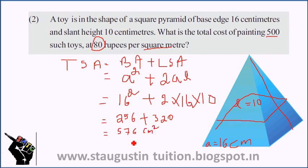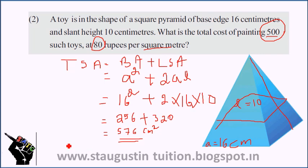This is the total surface area of one toy. For 500 toys, the total surface area is equal to 576 multiplied by 500.